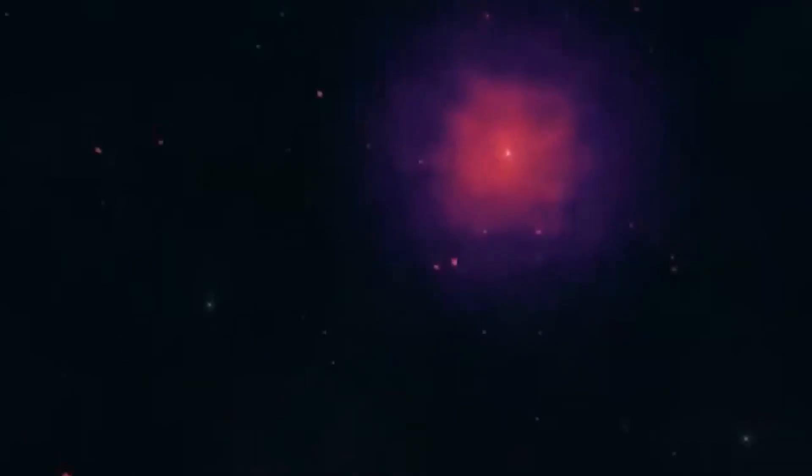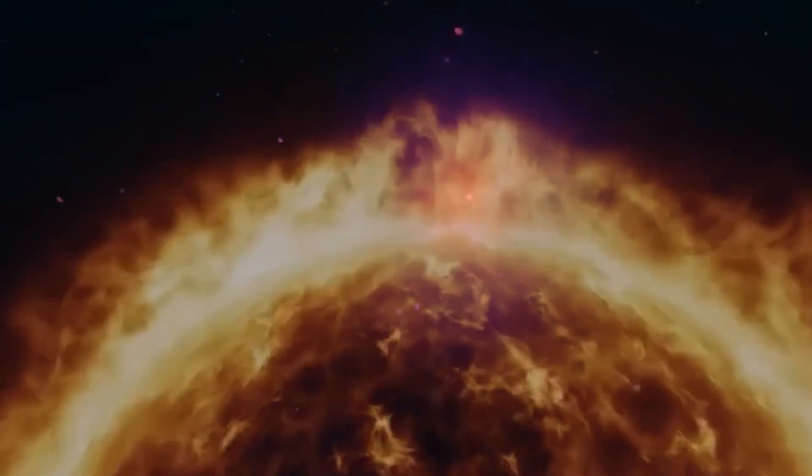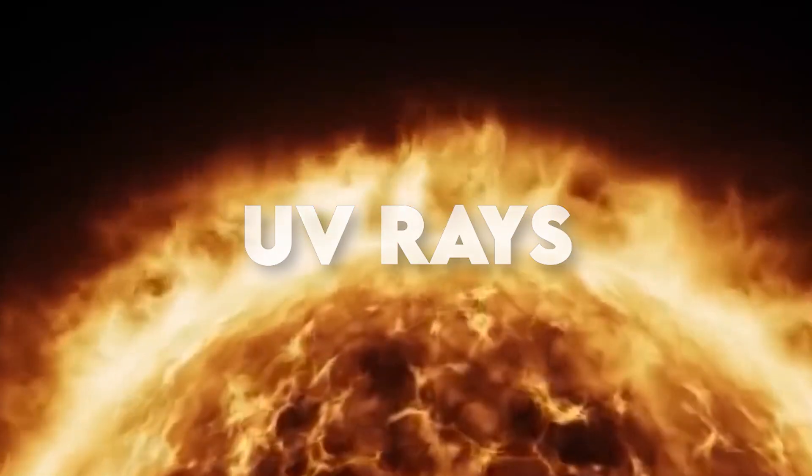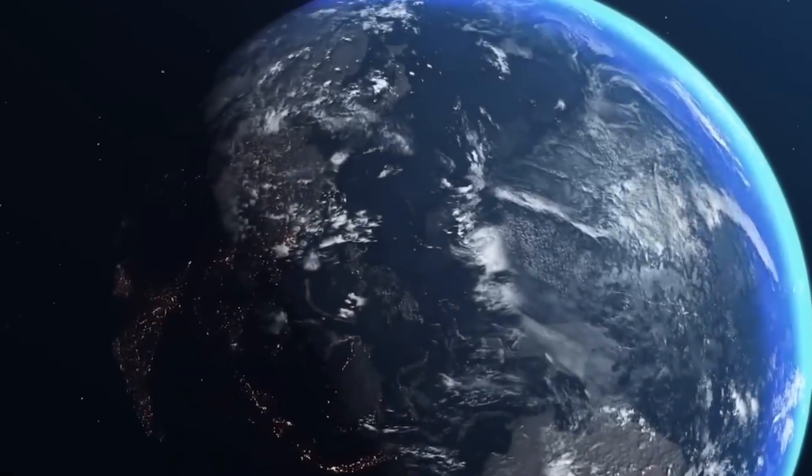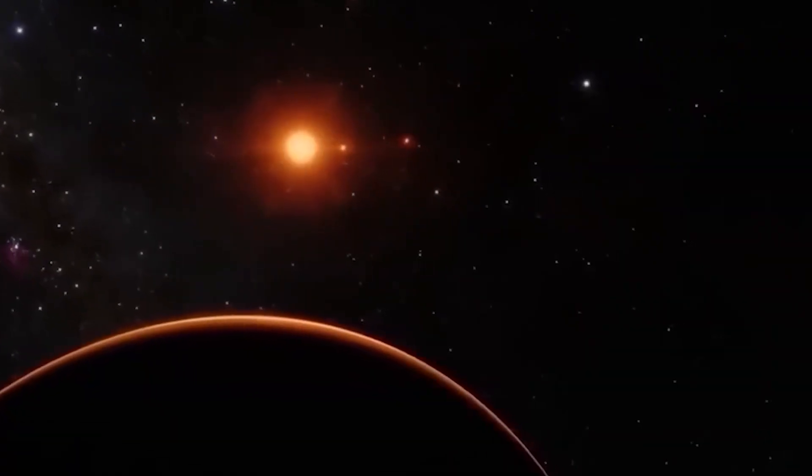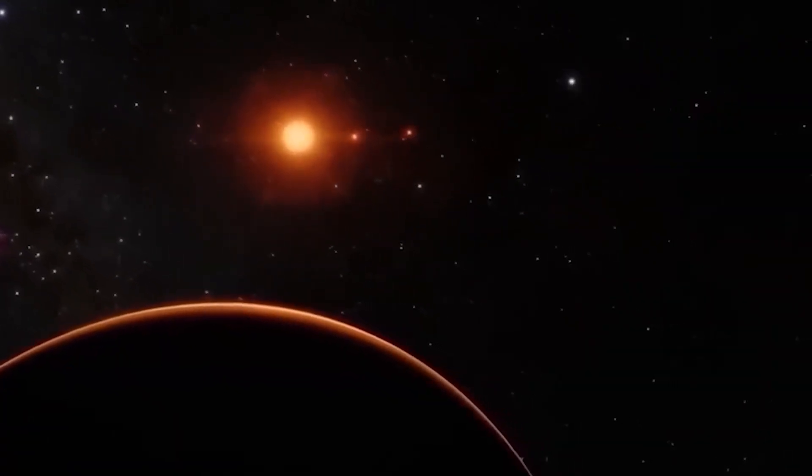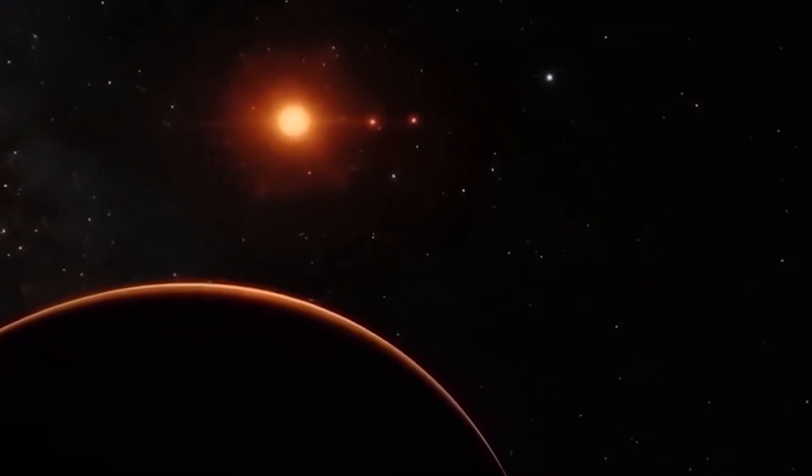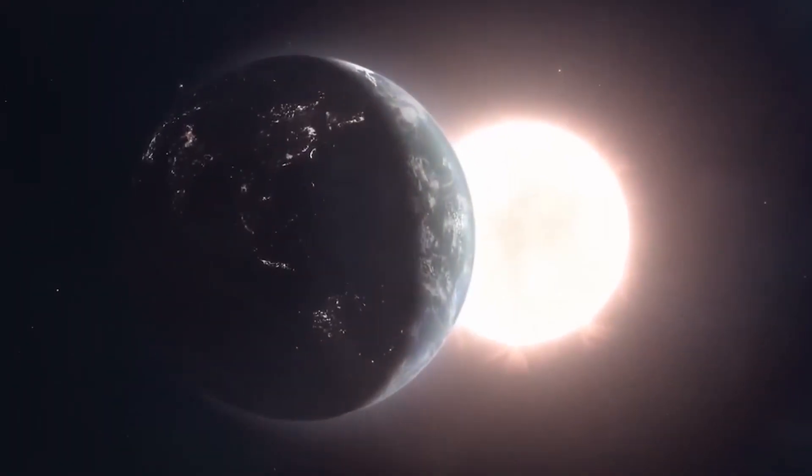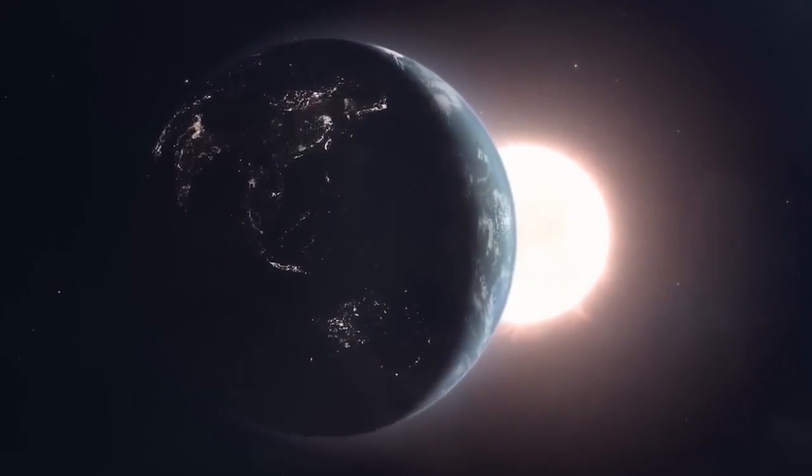Also, without an ozone layer, Proxima Centauri b's surface would no longer be protected from UV rays. Without the ozone layer, it would take 65 times more radiation to kill 90% of one of the most UV-resistant animals on Earth during the Proxima's superflare. Life would have to suffer extreme UV adaption or live below or beneath water, according to Howard.